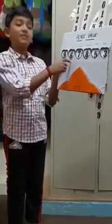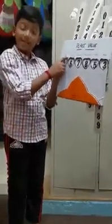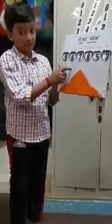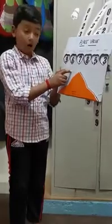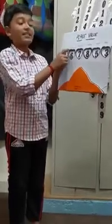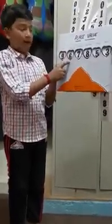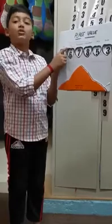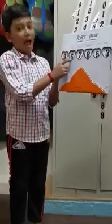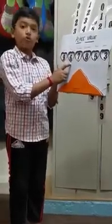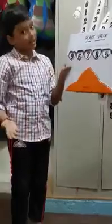What is the place value of 6 in this number? The place value of 6 in this number is 60,000, because 6 is in the tens of thousands place. So the place value is 60,000.